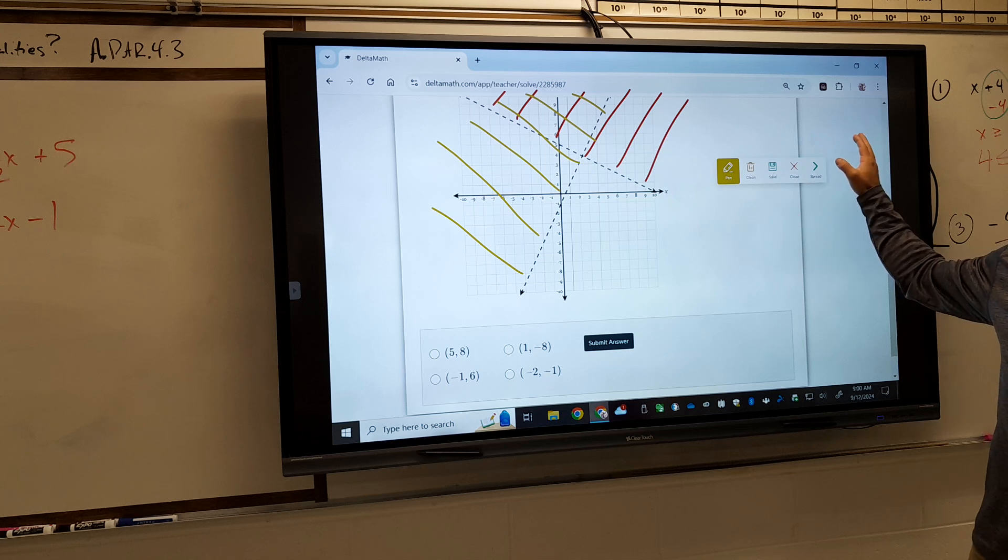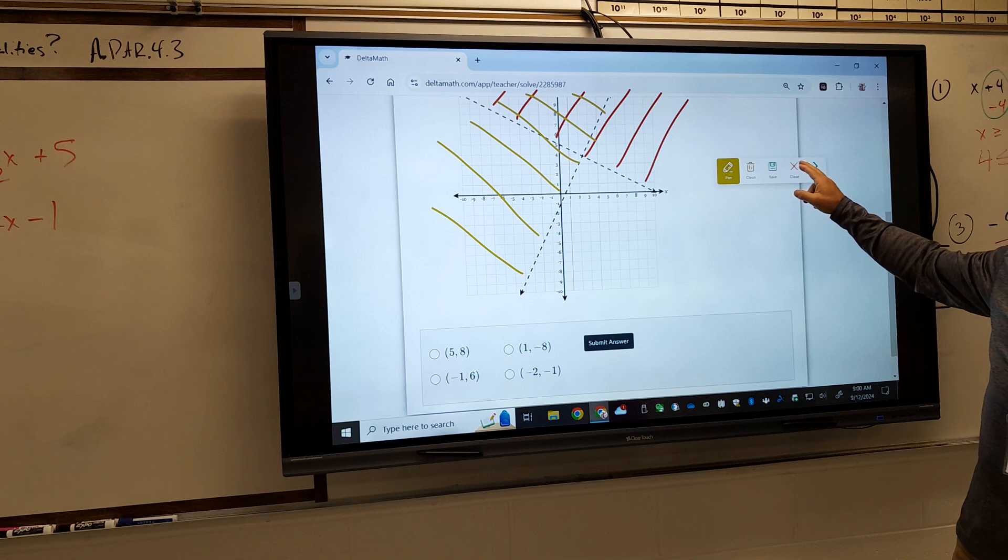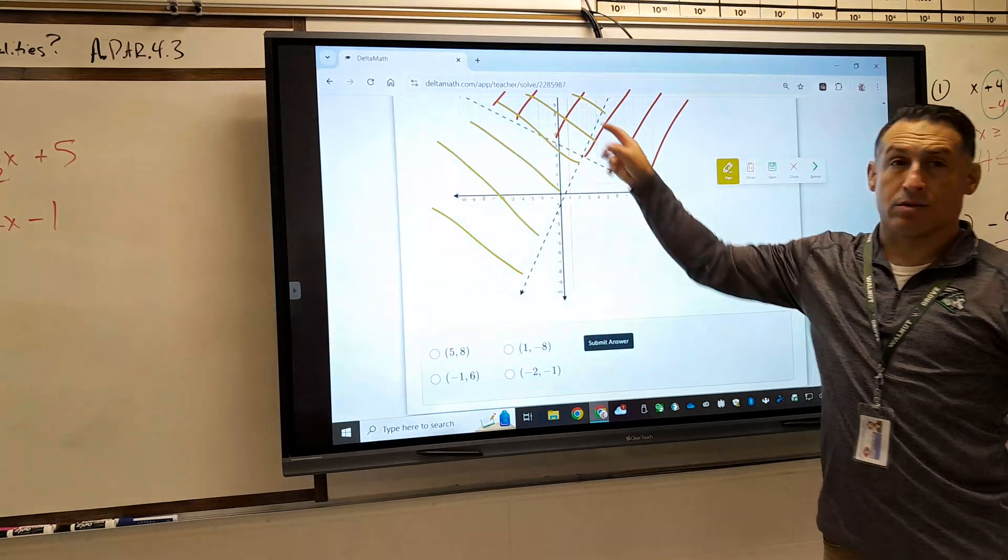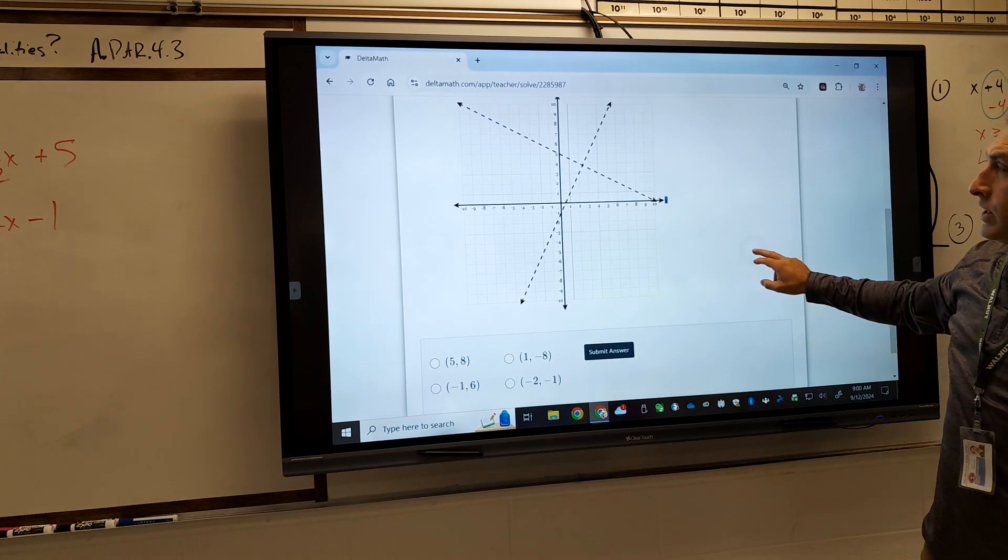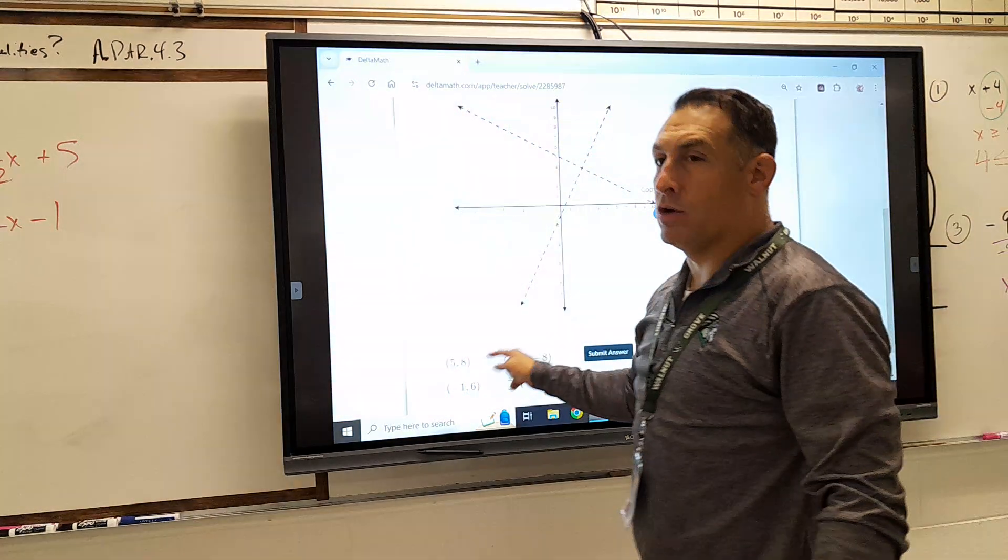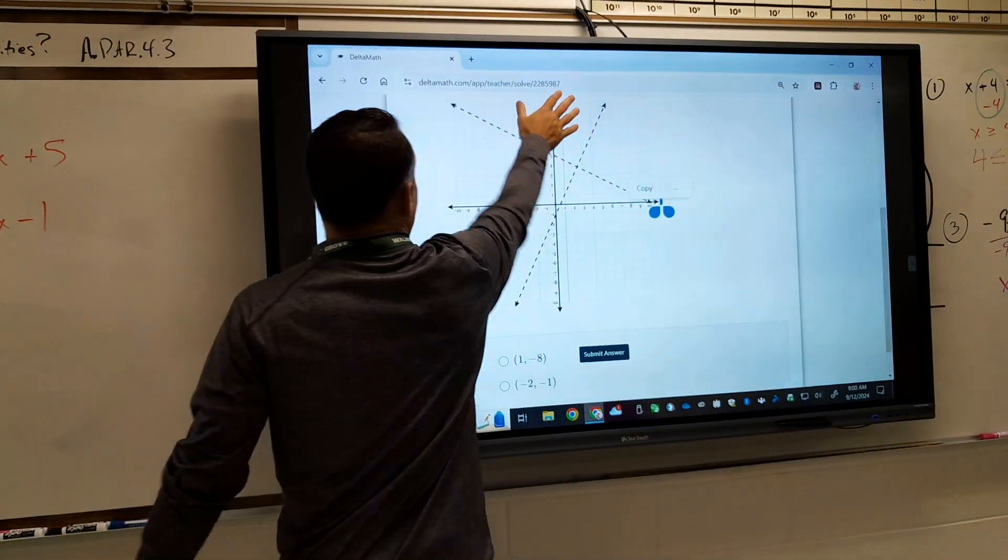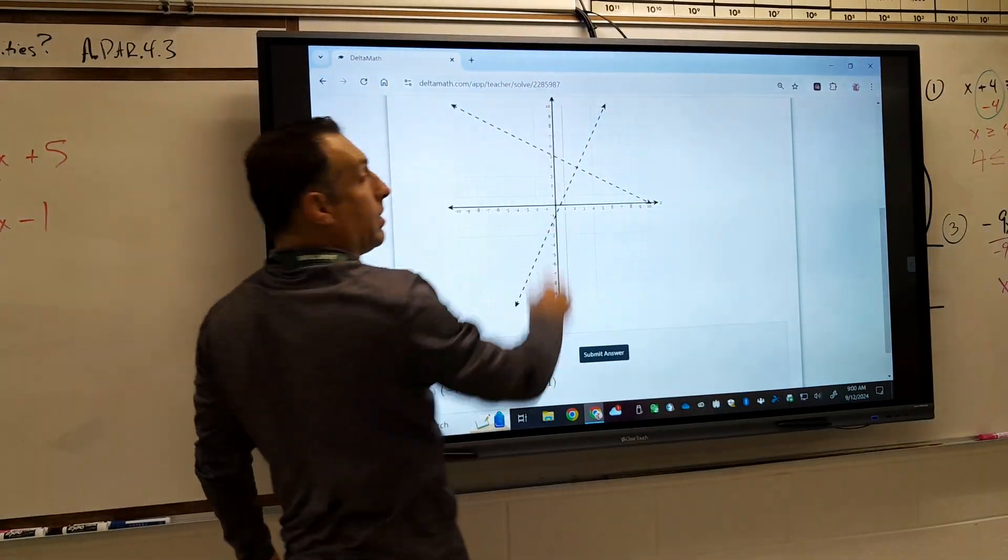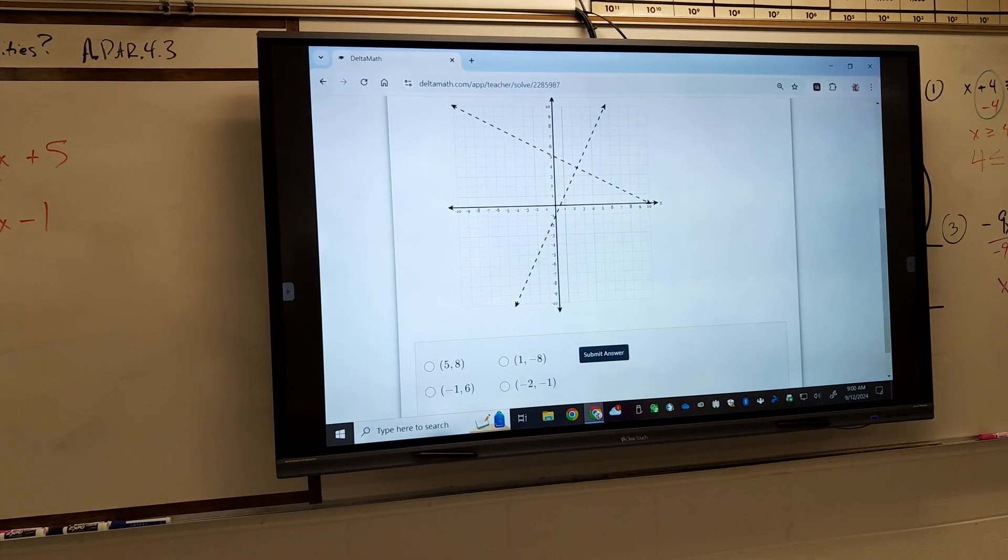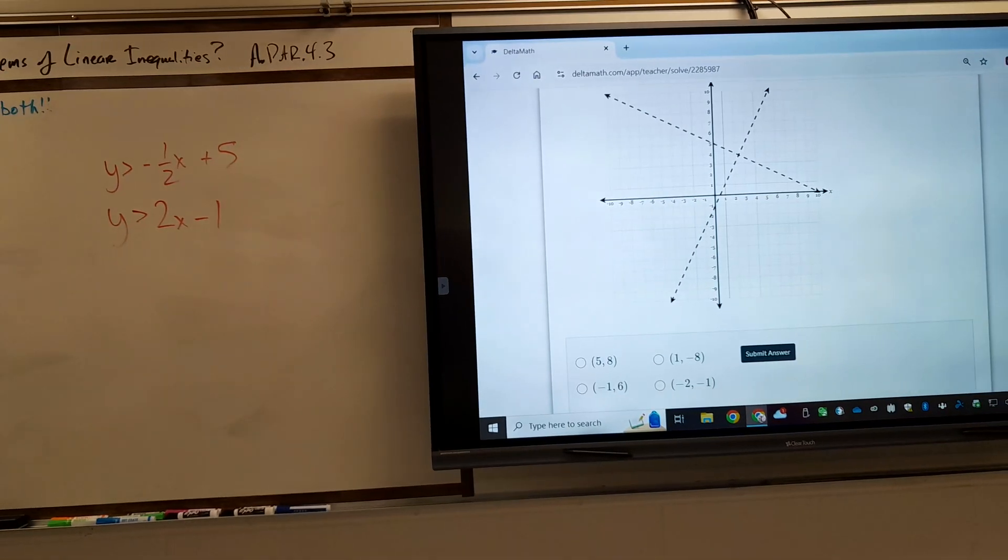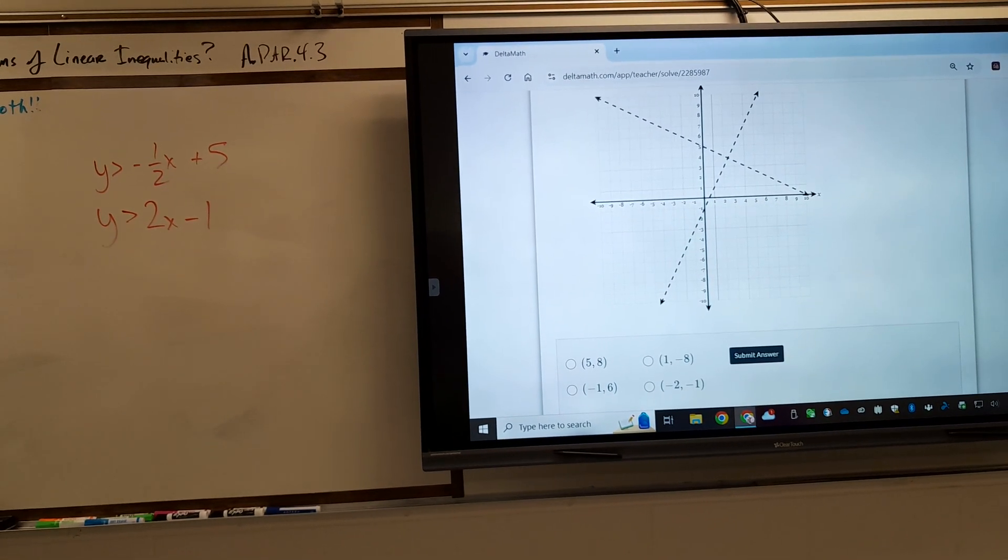The next one has the positive slope right here, greater than 2x minus 1, and that one says also above. The answers, though, are where they crisscross. You see how they crisscross right there, that's where the solution set is. I'm not expecting you to have this written down at this time, but I need to know that's where the answers are.